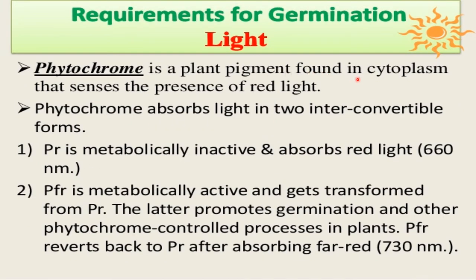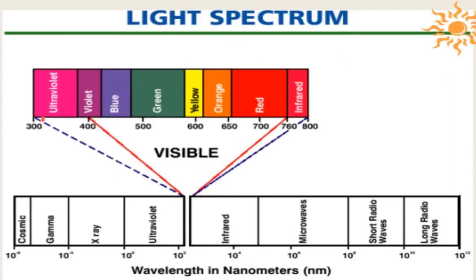Phytochrome is a plant pigment found in the cytoplasm that senses the presence of red light. Phytochrome absorbs light in two interconvertible forms. PR is metabolically inactive and absorbs red light at 660 nanometers. PFR is metabolically active and gets transformed into PR. PR promotes germination and other phytochrome processes control plant growth. PFR reverts back to PR after absorbing far-red light at 730 nanometers. The red light spectrum is from 650 to 760 nanometers.